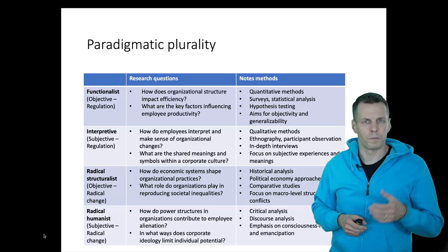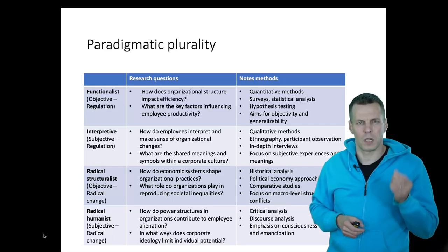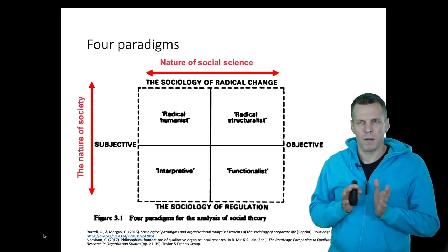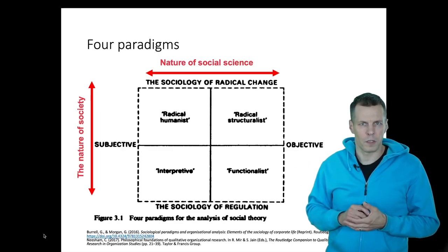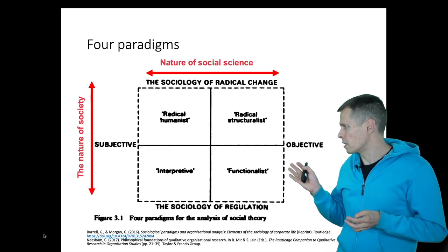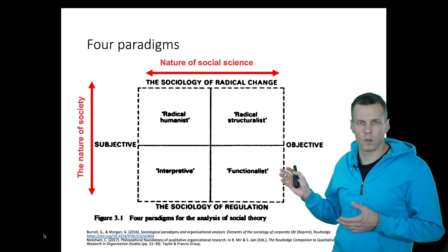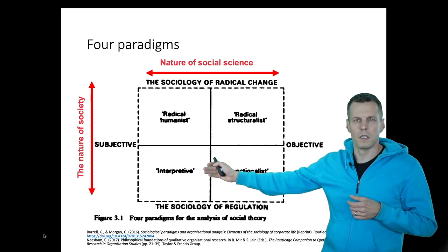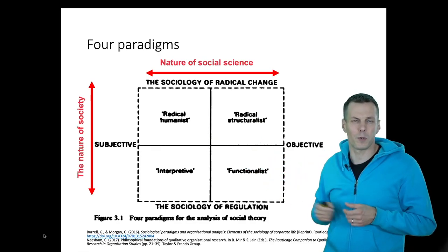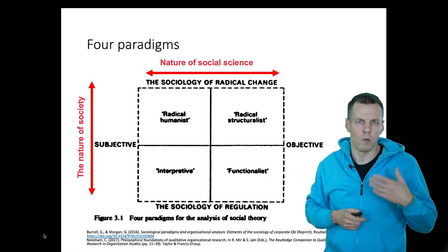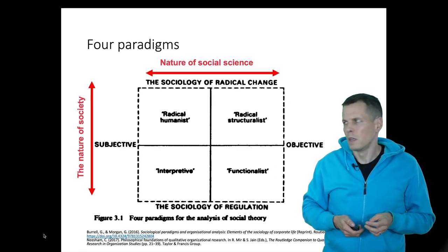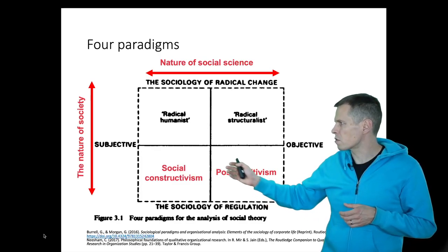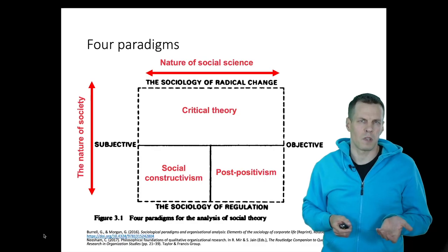We can also do radical research where the objective is not to document or explain reality but to change reality. The paradigms available for a qualitative researcher are four, according to this diagram. We have the functionalist, where we assume reality is objective; we assume subjective reality in interpretive research; and then we have the radical versions where the purpose of research is to change the status quo. This is sometimes called post-positivism or realism, this is sometimes called social constructivism, and these are sometimes called critical theory.